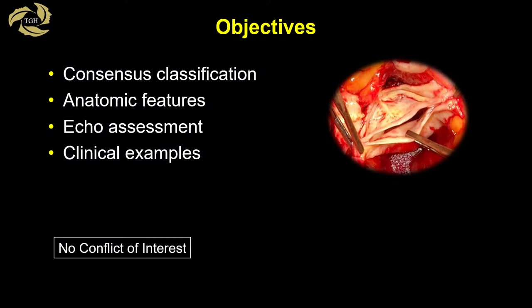During this talk, we will review the recent consensus classification for the congenital bicuspid aortic valve and its aortopathy, explain the key anatomic features that determine success of bicuspid aortic valve repair, review the echo assessment for bicuspid aortic valve repair, and show some clinical examples.